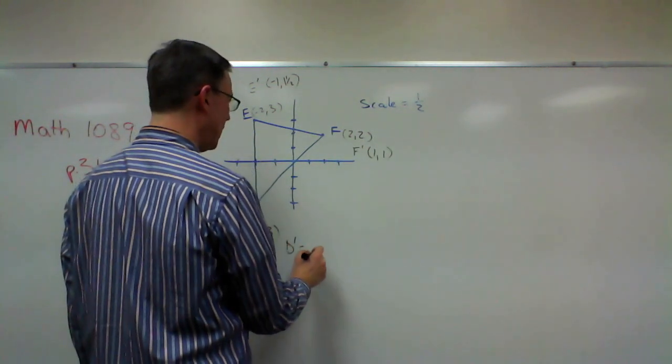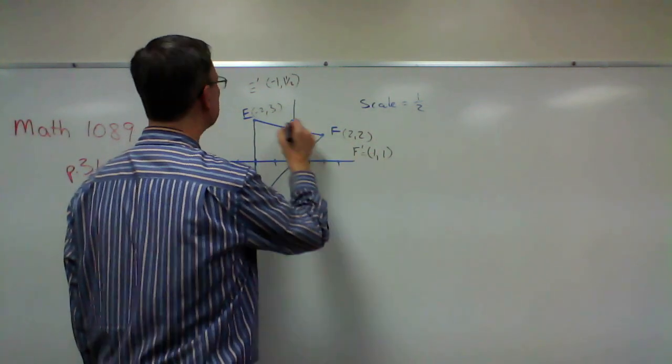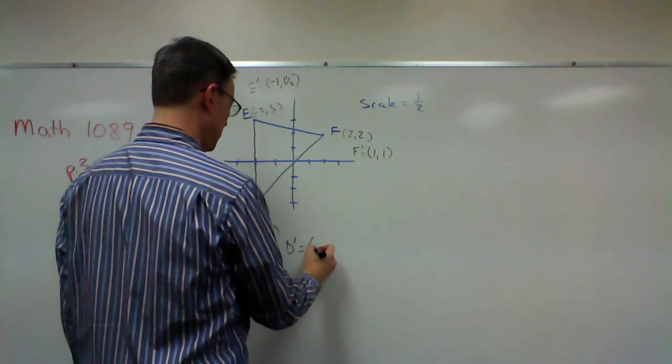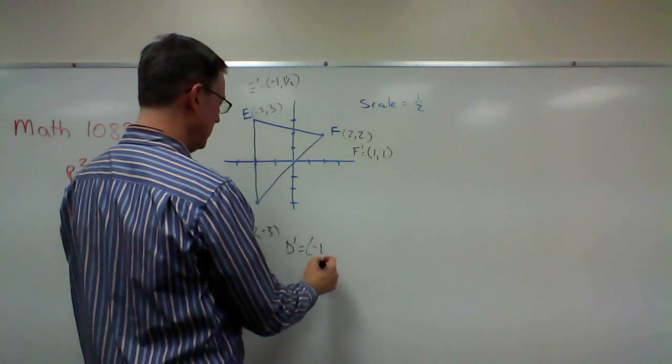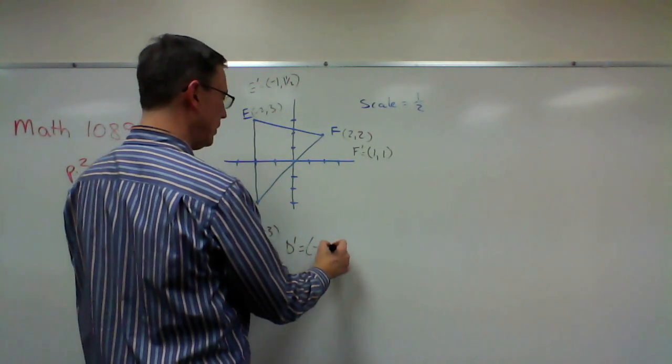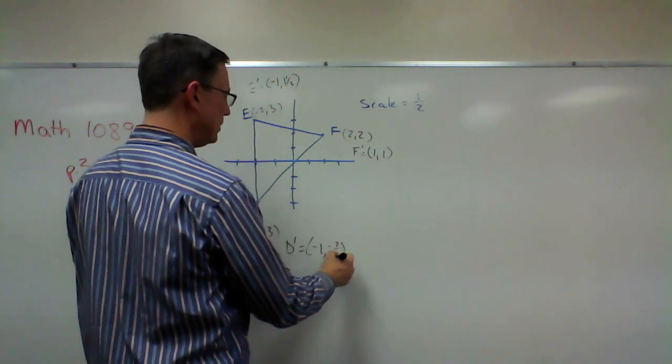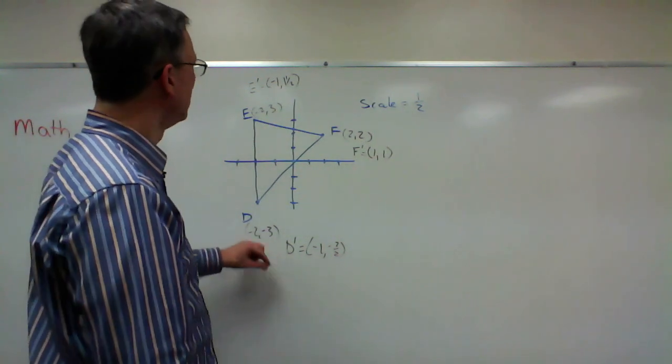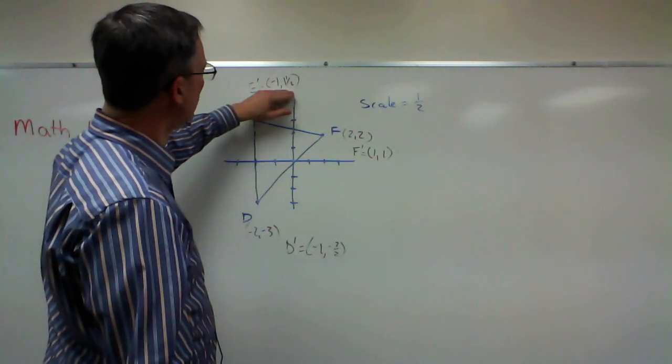And D prime is going to be the point negative one, and then negative three over two, which is the same as negative one and a half. All right, so now we're going to take these points and graph them.